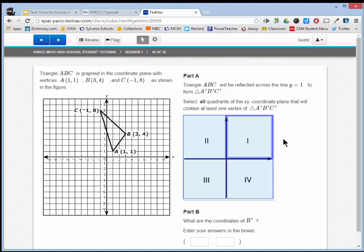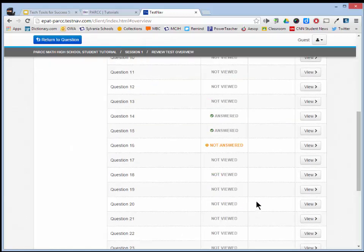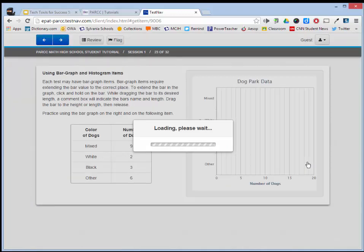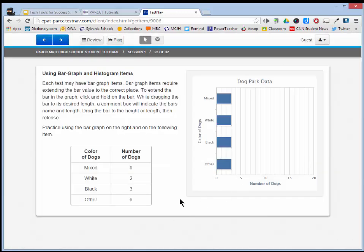Let's move on to our next high school math tool. Move forward to number 23. And let's take a look at bar graph and histogram items.